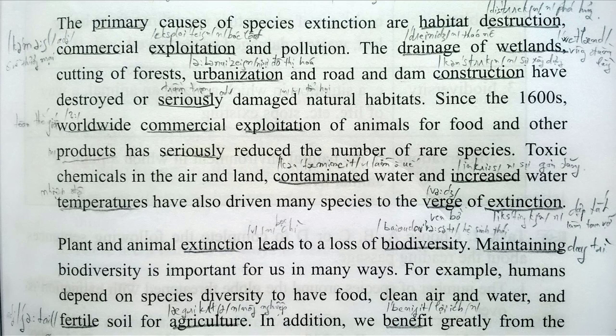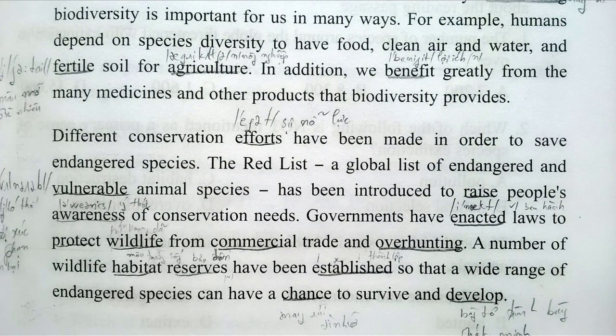Plant and animal extinction leads to a loss of biodiversity. Maintaining biodiversity is important for us in many ways. For example, humans depend on species diversity to have food, clean air and water, and fertile soil for agriculture. In addition, we benefit greatly from the many medicines and other products that biodiversity provides.